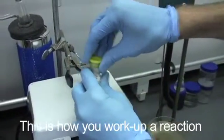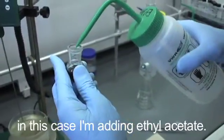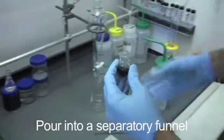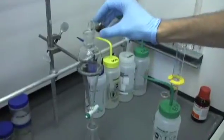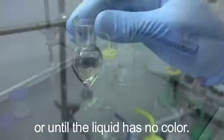This is how you work up a reaction. Add some of the organic solvent, in this case I'm adding ethyl acetate. Pour into a separatory funnel. Rinse the flask a couple of times, or until the liquid has no color.